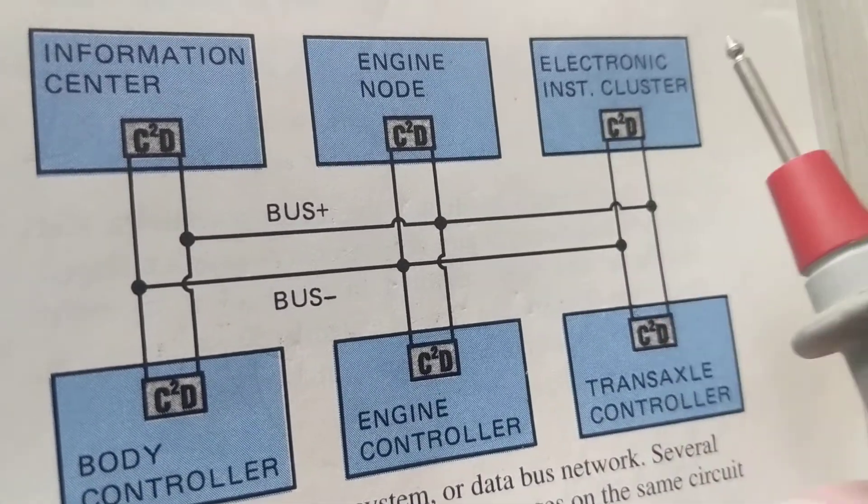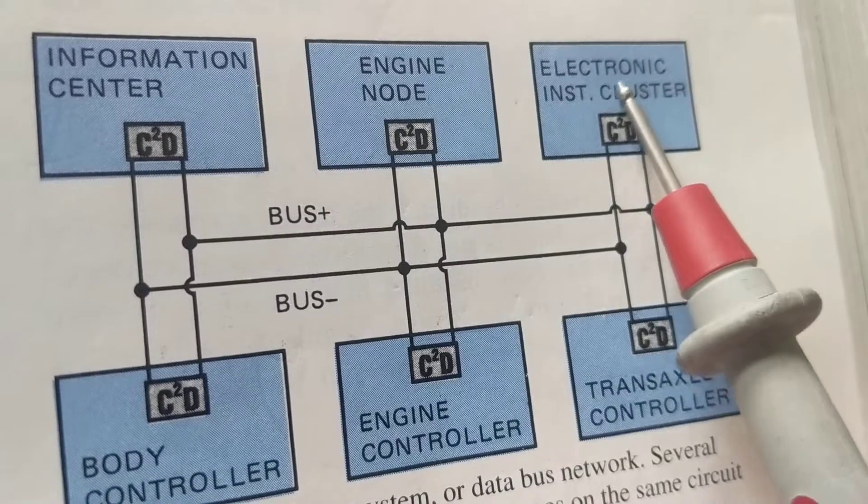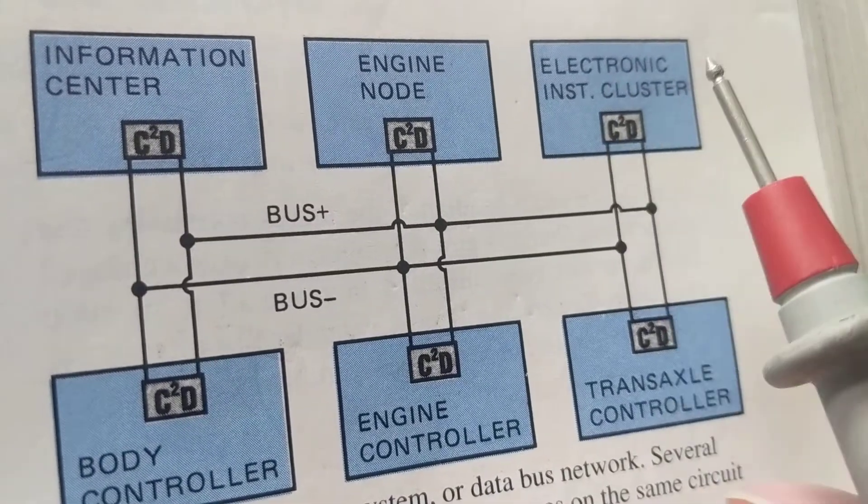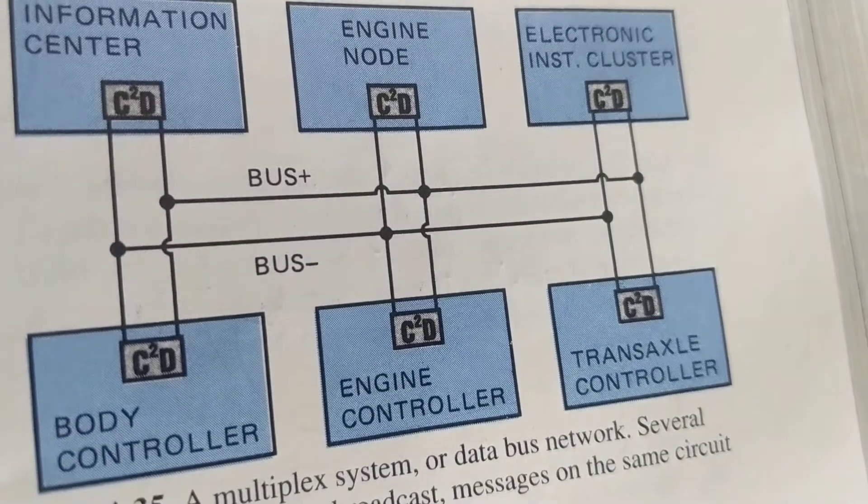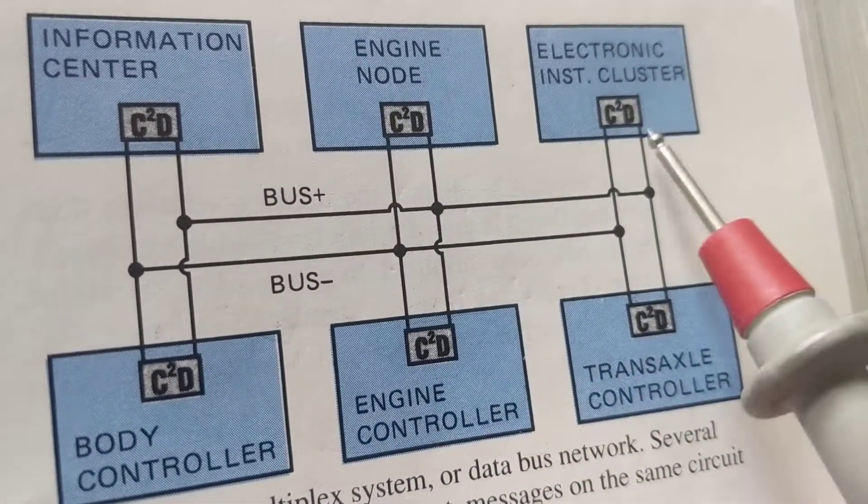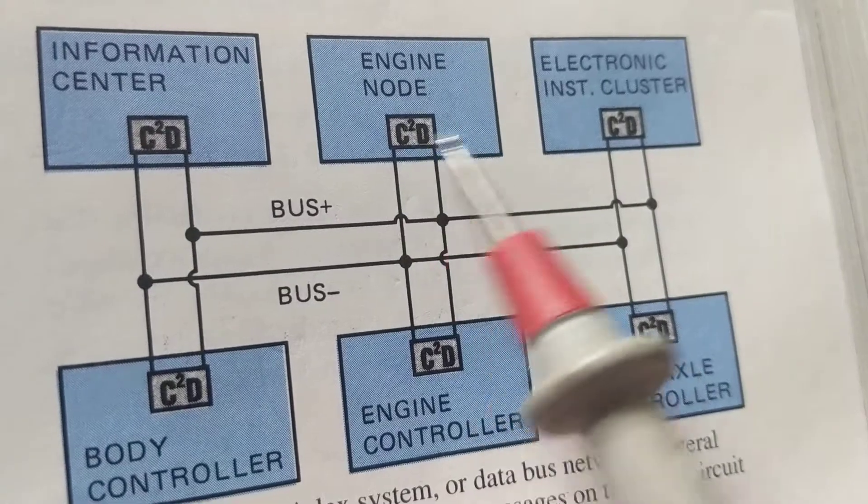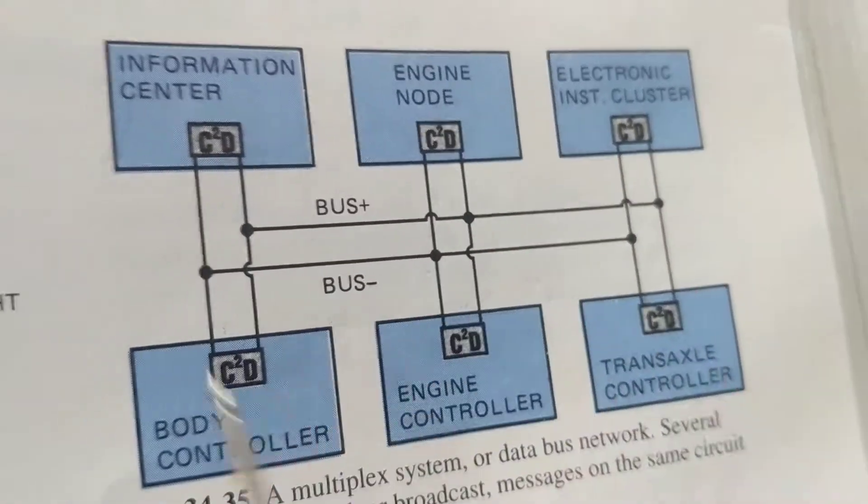RPM, the engine cooling temperature, the oil pressure. All is received. He is a receiver, but the other one could be a sender or transmitter, and that's what I explained before.